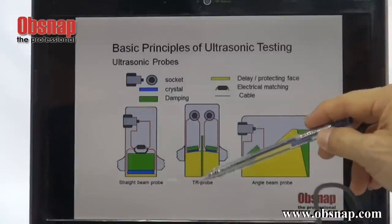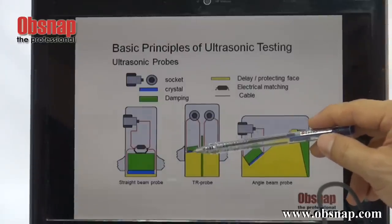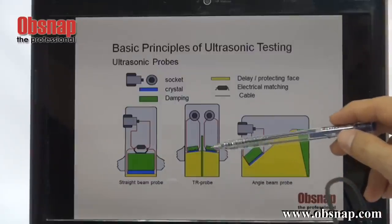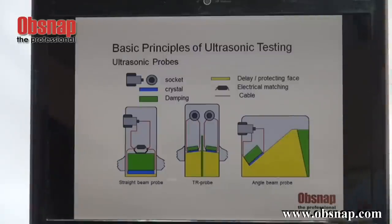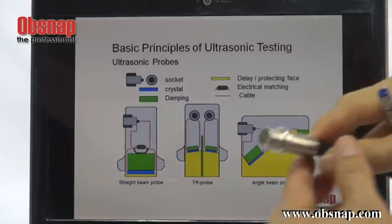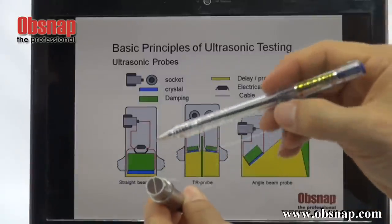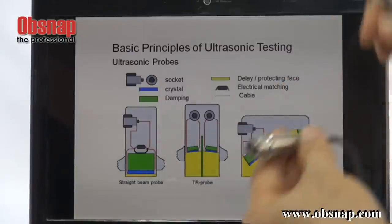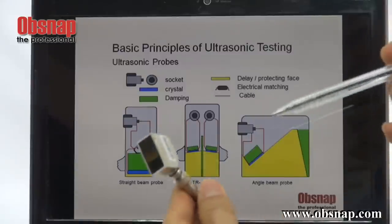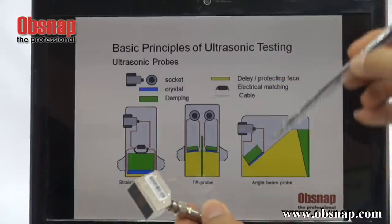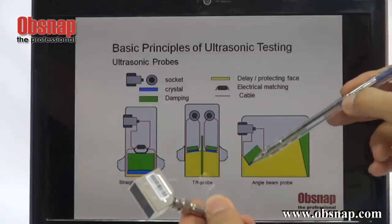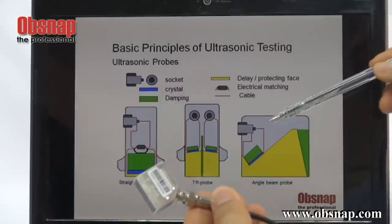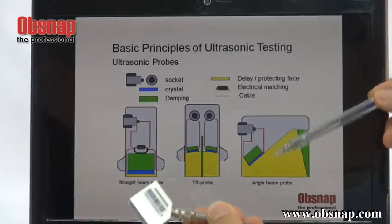This is called the Twin Crystal Probe — one crystal is actually to transmit the sound wave and the other is responsible to receive and detect the reflected echo. And this is the angle probe. It is called an angle probe because the crystal is actually sitting at an angle, which allows detection of very thin material — down to probably 5 mm or even slightly thinner.